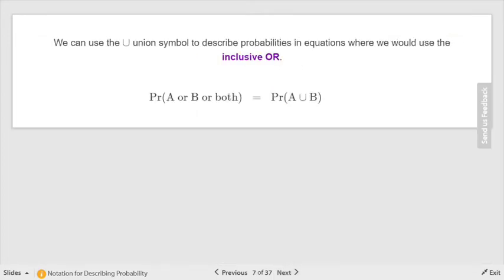Here's a better description of it. We can use the union symbol to describe probabilities in equations where we'd use the word inclusive or. Don't worry about inclusive or—that means both can happen at the same time. They have to tell you if it's not. Otherwise, it's always inclusive. The probability of A or B or both, that's what inclusive means, is represented as the probability of the union of A and B, A union B.